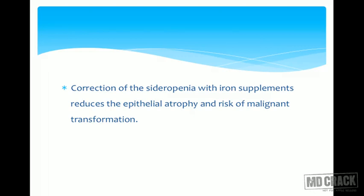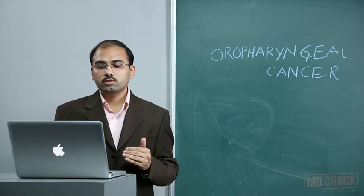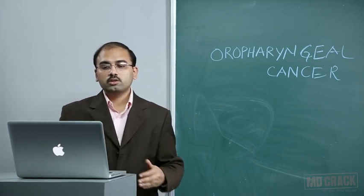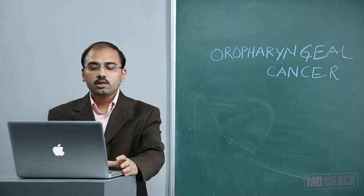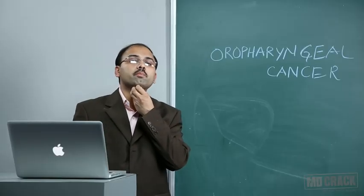Now we will see various classifications of aerodigestive tract tumors. Oral cavity tumors and other mucosal lesions are classified identically for all mucosal sites of head and neck except the nasopharynx. We will now see various levels of lymph nodes. Level 1 is associated with the submental and submandibular triangles. Levels 2, 3, and 4 nodes are associated with the internal jugular vein within fibrofatty tissue, between the posterior border of sternocleidomastoid and lateral border of sternohyoid.